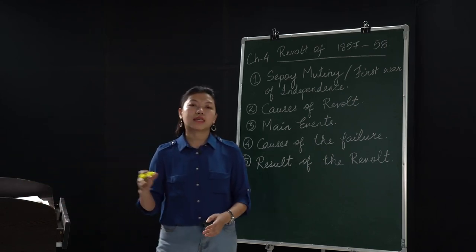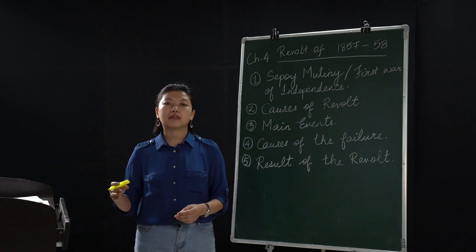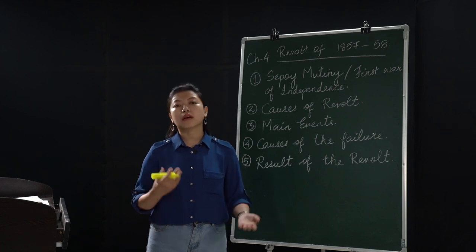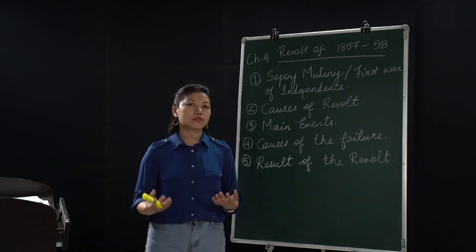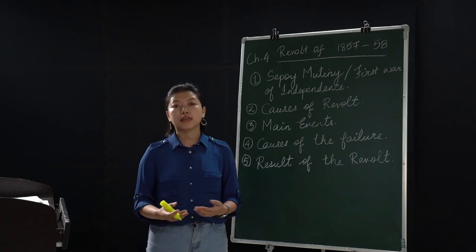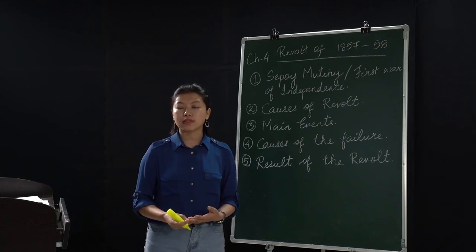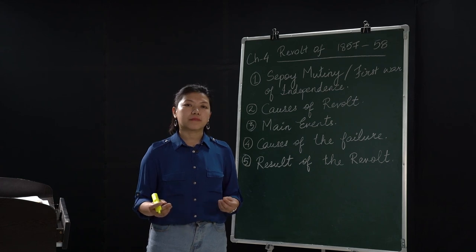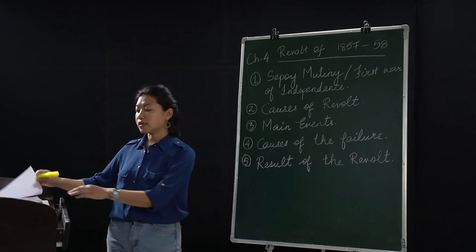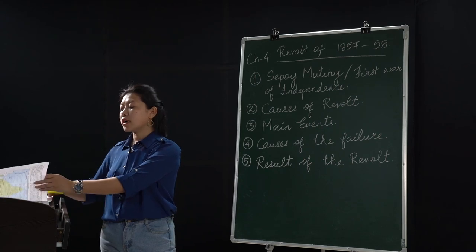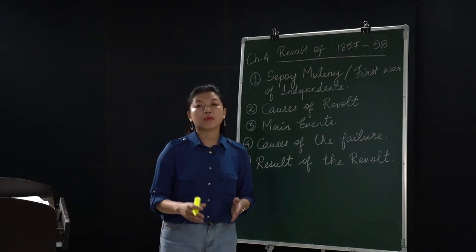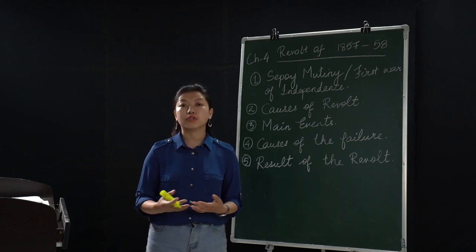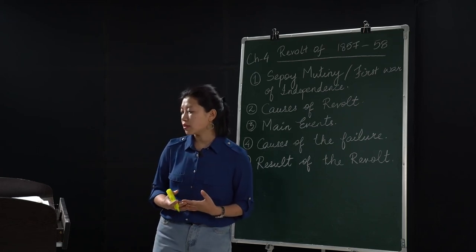Nana Sahib was living a very comfortable, luxurious life, but when the revolt broke out, he also took part and fought against the British. He was later defeated by General Havelock. After his defeat, he became powerless and fled to Nepal, after which there was no news of him. We still don't know his whereabouts.